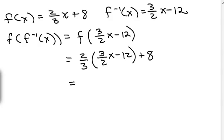So I do the distributive property here. So we have 2 thirds times 3 halves x. That's going to be x minus 2 thirds times 12. The 3 goes into the 12, 4 times 2. That's going to give you 8. Or you could think of that as 24 thirds which is also 8 plus 8. And so I do get this to equal x. So these are inverses of each other.